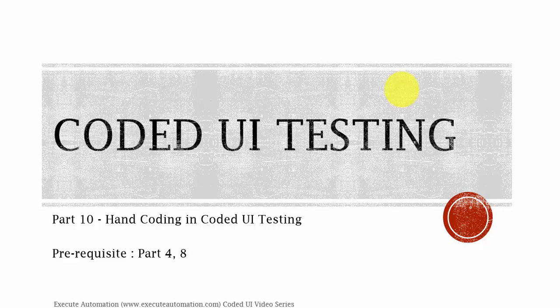Hey, hello guys. This is Karthik from executeautomation.com. This is part 10 of our Coded UI video series. In this part, we are going to discuss about Coded UI hand coding. So far from part 1 through part 9, we were doing record and playback of the code, using the Coded UI Test Builder to record the code from the application's UI, and then we just ran the test and it was executed.